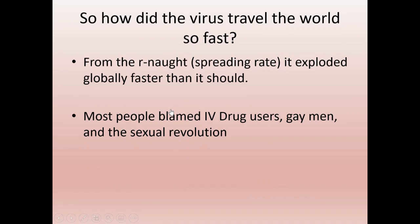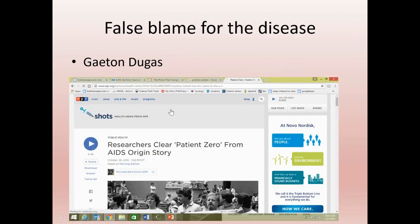Now let's get to how the virus went around the world so fast. The R-naught for HIV is around 1.2 to 2. The way it spread around the world had an R-naught significantly higher — something closer to measles, around 11. At the time, people were blaming IV drug users, gay men, and the sexual revolution. One other person blamed was called Patient Zero.